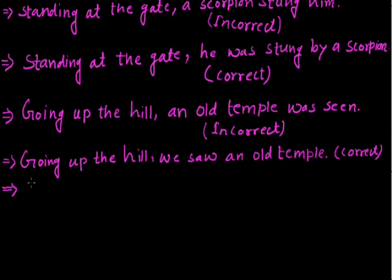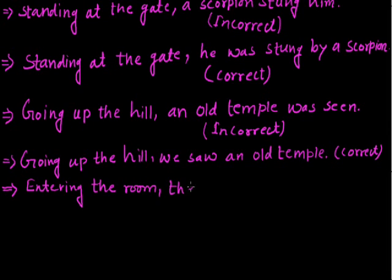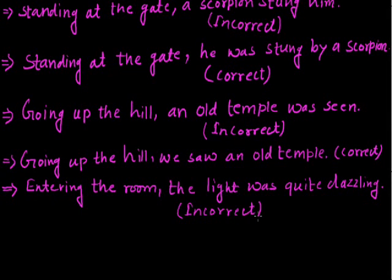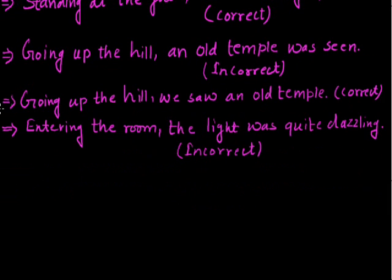Another example: 'entering the room, the light was quite dazzling.' This sentence reads that the light entered the room, which is incorrect and creates confusion. Instead, we should say 'entering the room, we were quite dazzled by the light', or 'entering the room, I found the light quite dazzling.'